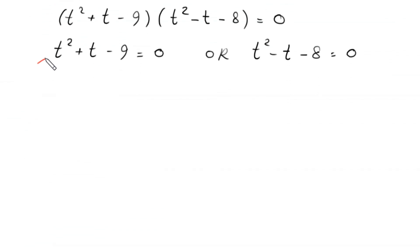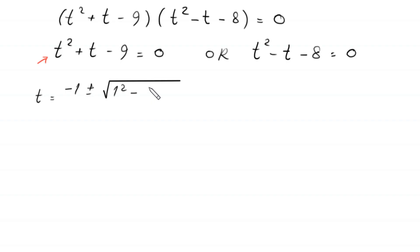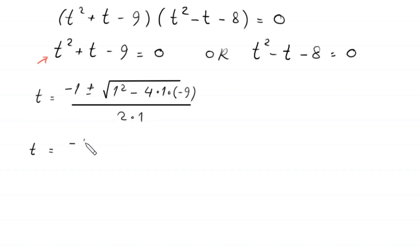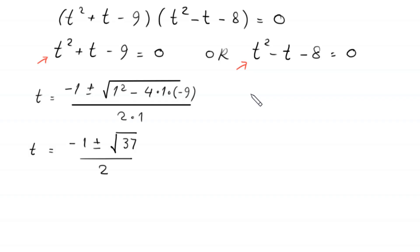From the first quadratic equation t squared plus t minus 9 equals 0, the quadratic formula gives t equals (negative 1 plus or minus square root of (1 plus 36)) over 2, which is (negative 1 plus or minus square root of 37) over 2.